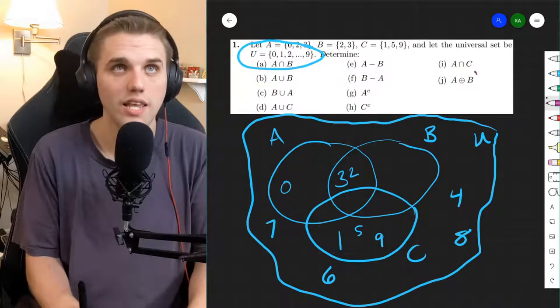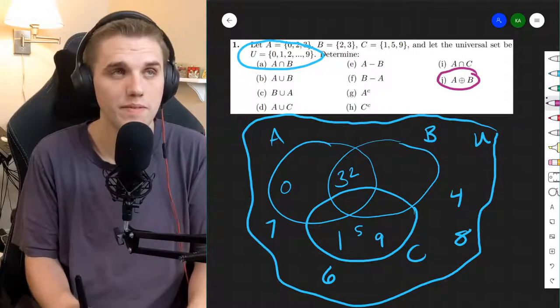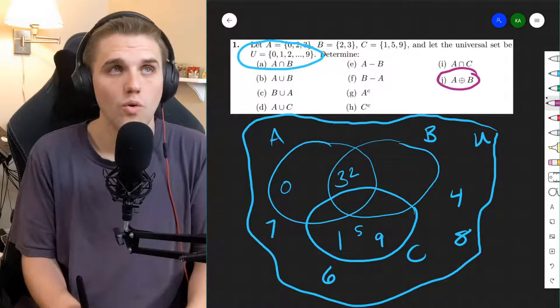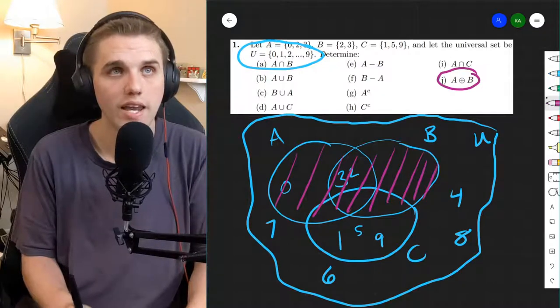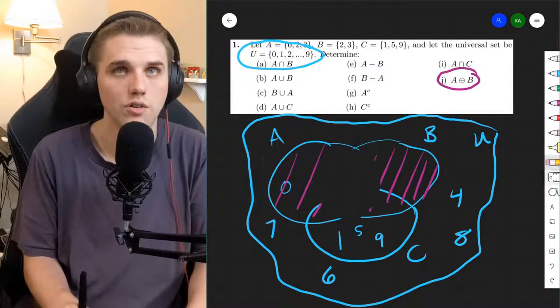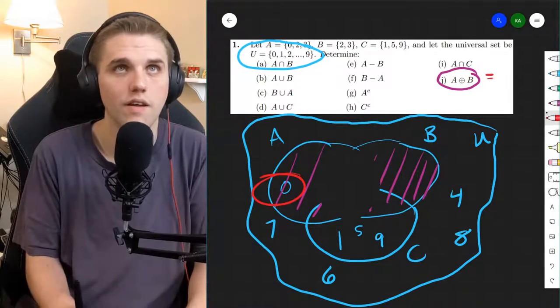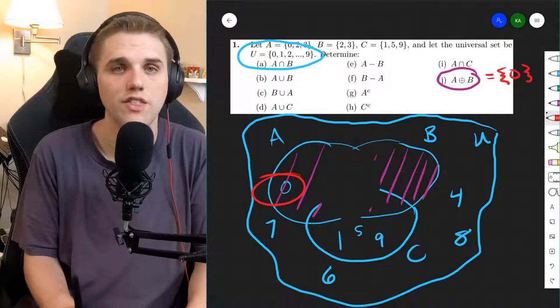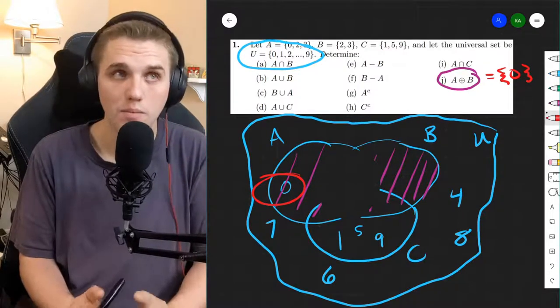And last but not least, this is the symmetric difference of A and B, which is everything in the union minus everything in the intersection. And so that is specifically 0 right here. So it's everything that is in either A or B, but not in both.